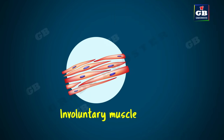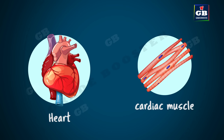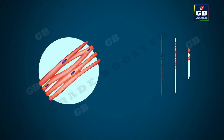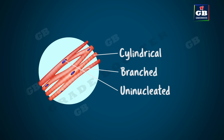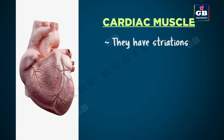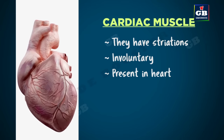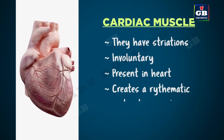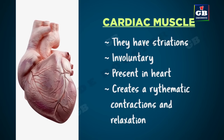Involuntary muscles are also called unstriated muscles and smooth muscles. The other type of muscular tissue is cardiac muscle or heart muscle. The heart muscle cells are cylindrical, branched, and uninucleated. They have striations, but they are involuntary in nature. They are present in the heart. Cardiac muscle creates a rhythmic contraction and relaxation of the heart.